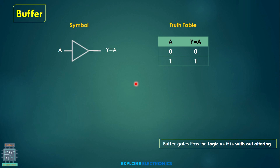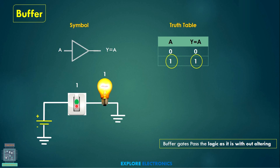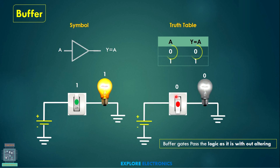Before going to the NOT gate, let us understand the buffer first. A buffer is a device that will pass the input as it is at the output without changing any functionality. The buffer is represented with a triangle symbol. In the truth table, if the input is 0 the output will be 0. When the switch is 1, the bulb is glowing — it completes the circuit. When input is 0, the bulb will be off. This is called a buffer circuit.